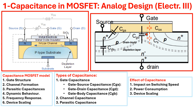Capacitance also appears in MOSFET modeling due to dynamic operation. During switching, the MOSFET needs to charge and discharge these capacitors, which affects the speed of operation. The time it takes to change the voltage across these capacitors impacts the overall switching speed and power consumption.